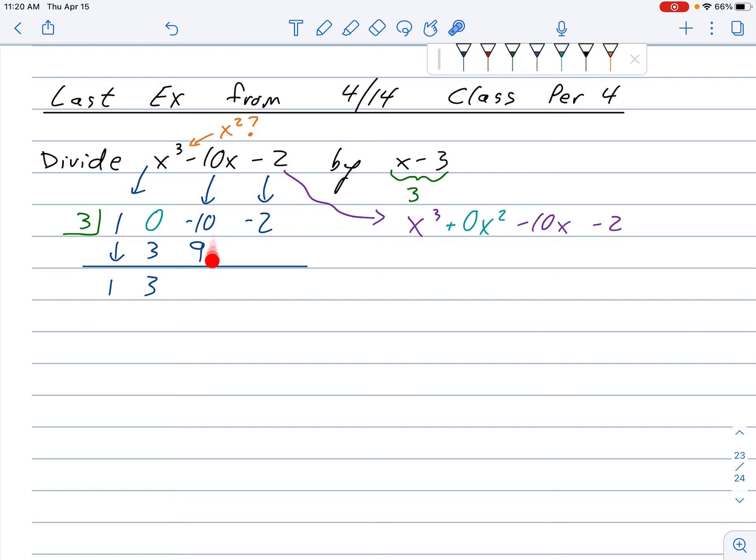Multiply over here. 3 times 3. That's 9. Add going down. Negative 10 and 9 is negative 1. 3 and negative 1 is negative 3. Add going down.